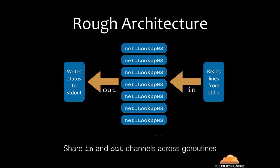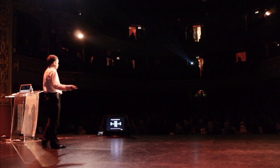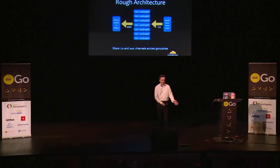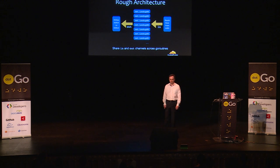The rough architecture I wanted to build: something that reads lines on stdin and stuffs them down channels — here's a job to do, in this case a DNS zone. A whole lot of goroutines call net.LookupNS from the standard library, and those things stuff their results — on Cloudflare, did something go wrong — down another channel, and something else writes it to stdout. Pretty simple architecture, and Go is great for this.